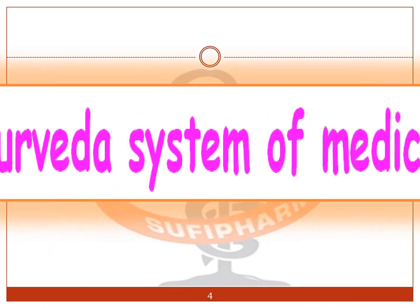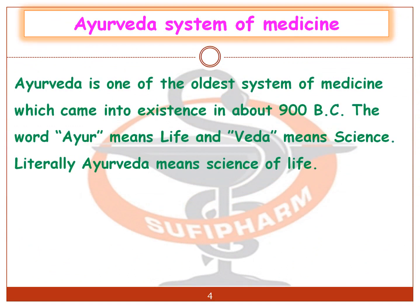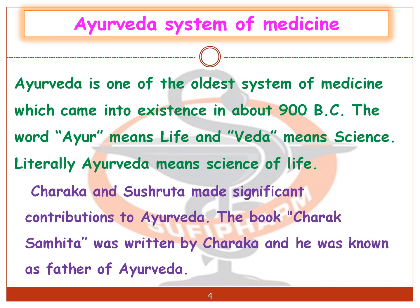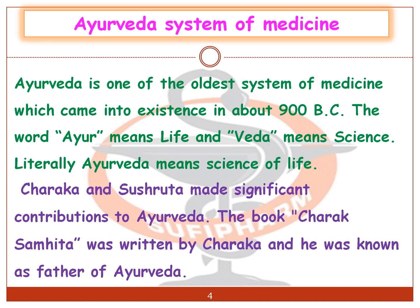The Ayurvedic system of medicine: Ayurveda is one of the oldest systems of medicine, which came into existence in about 900 BC. The word 'Ayur' means life and 'Veda' means science, so literally Ayurveda means science of life. Charaka and Sushruta made significant contributions to Ayurveda. The book Charaka Samhita was written by Charaka, who is known as the father of Ayurveda.